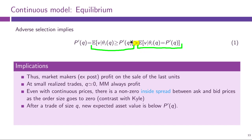When realized trades are small, the limit trader will always profit, because this inequality holds for all units traded. Even with continuous prices, this inequality generates an inside spread between bid and ask prices as order size goes to zero. This is something we did not have before — not in the Stoll model nor in the Kyle model, where price schedules were continuous at zero and prices for a very small buy order were very close to those for a very small sell order.